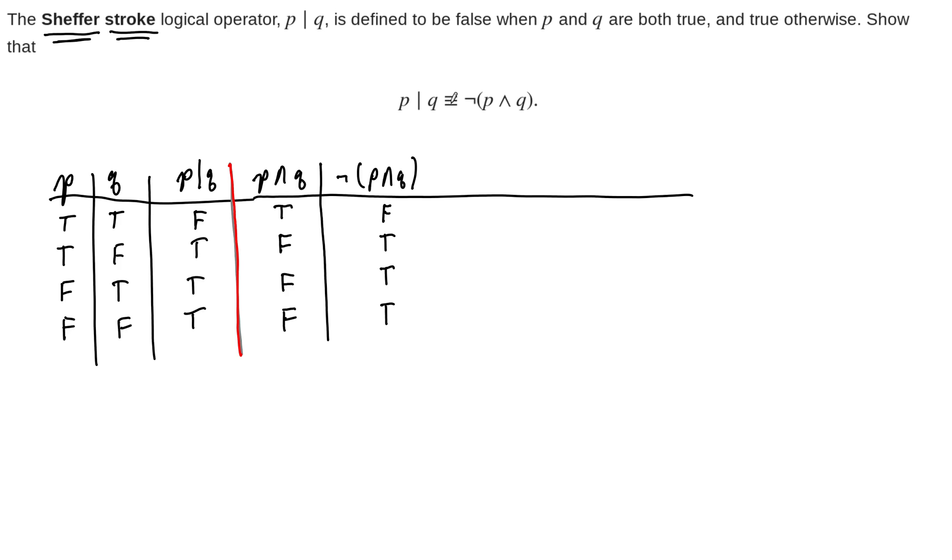And now one interpretation of the logical equivalence is that these two columns are the same. That is a consequence, though, of the following fact, which is the definition of the logical equivalence.